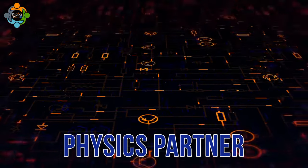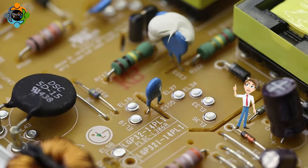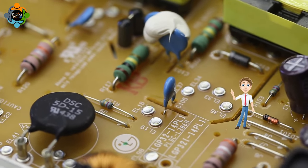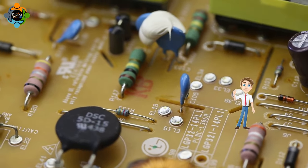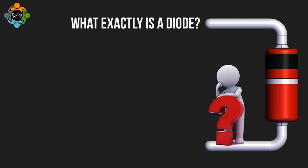Hello and welcome back to another episode of Physics Partner. Today we are going to talk about diodes, a fundamental component in electronics that plays a crucial role in controlling the flow of electricity. So what exactly is a diode?